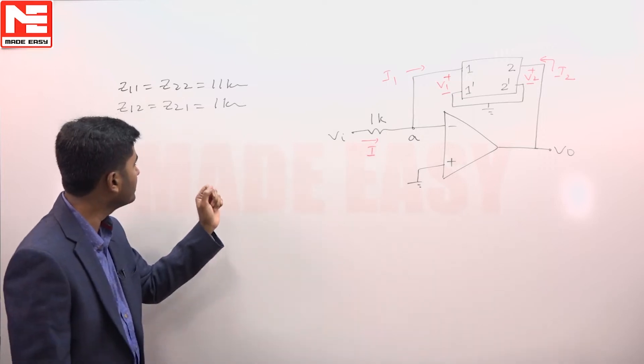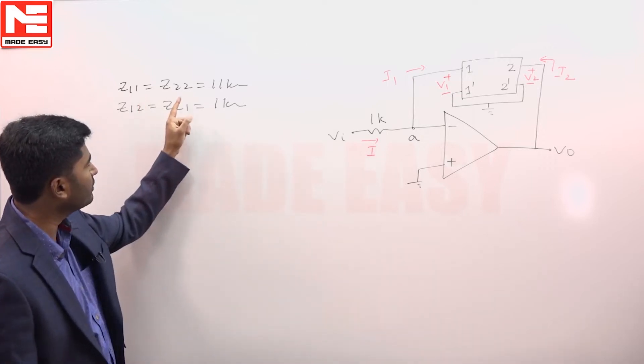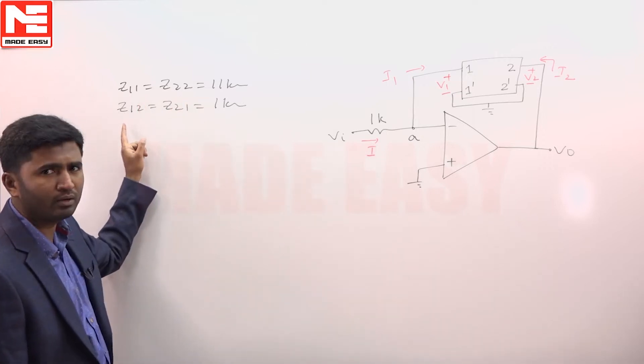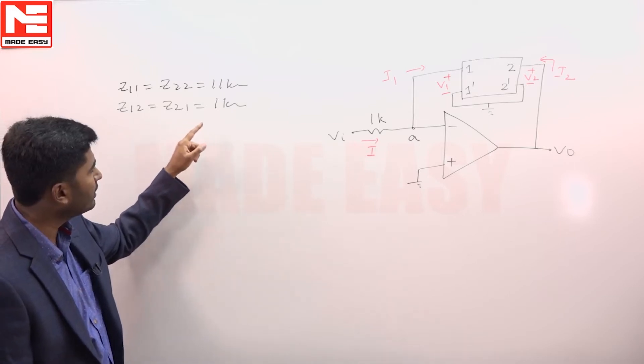Those z parameters are z 1 1 and z 2 2 equal to 11 kilo ohm, z 1 2 and z 2 1 equal to 1 kilo ohm.